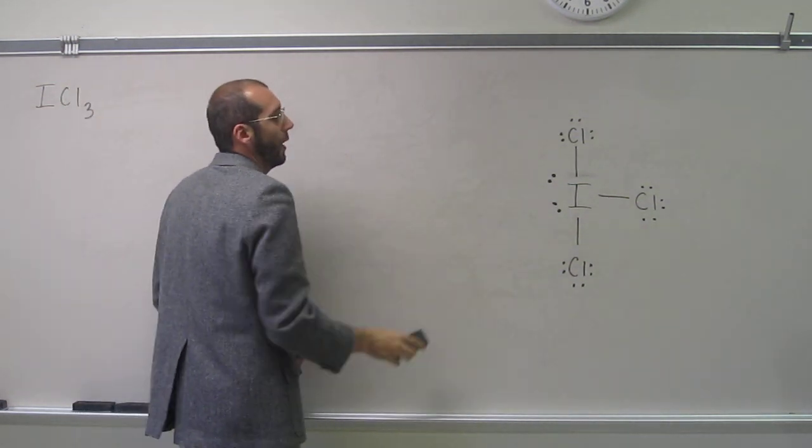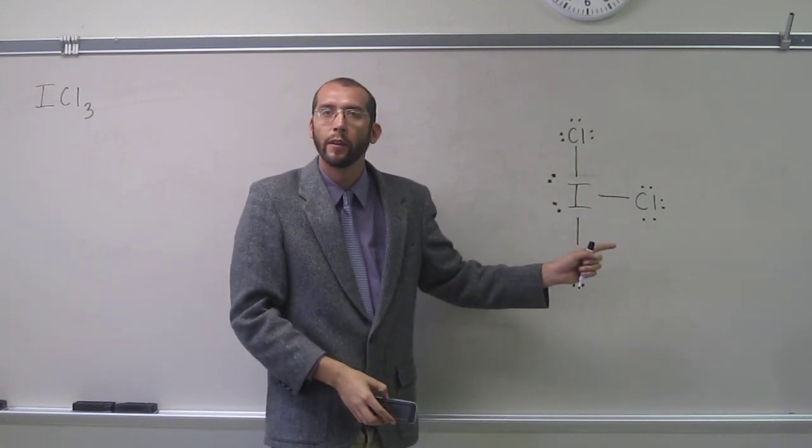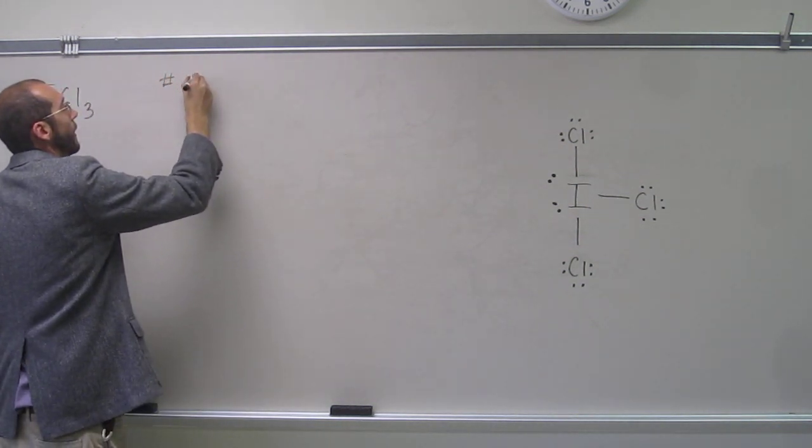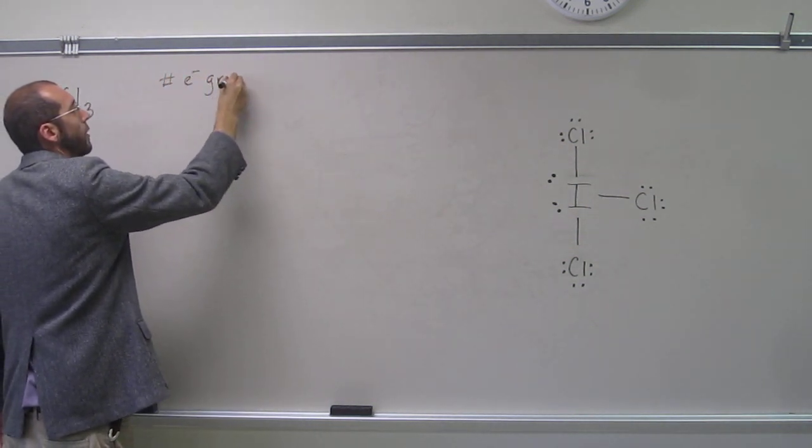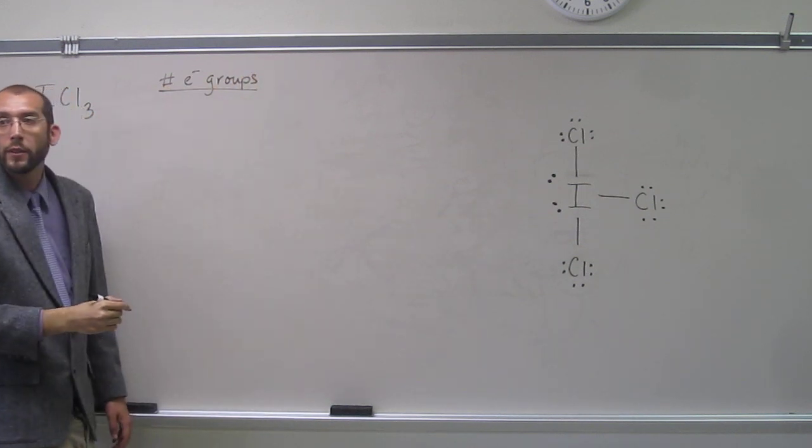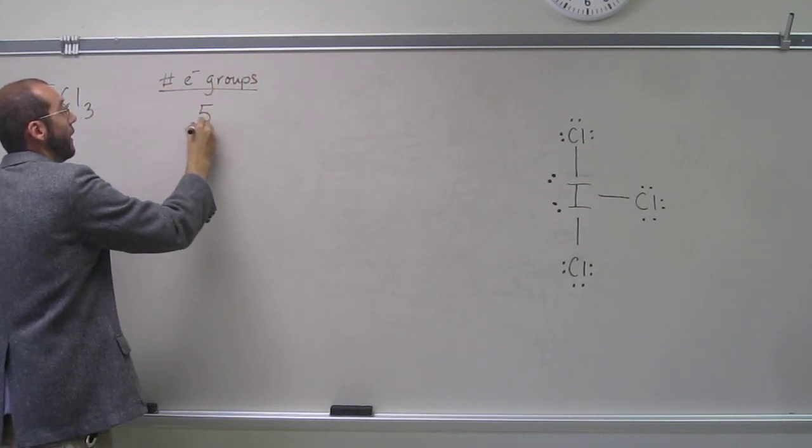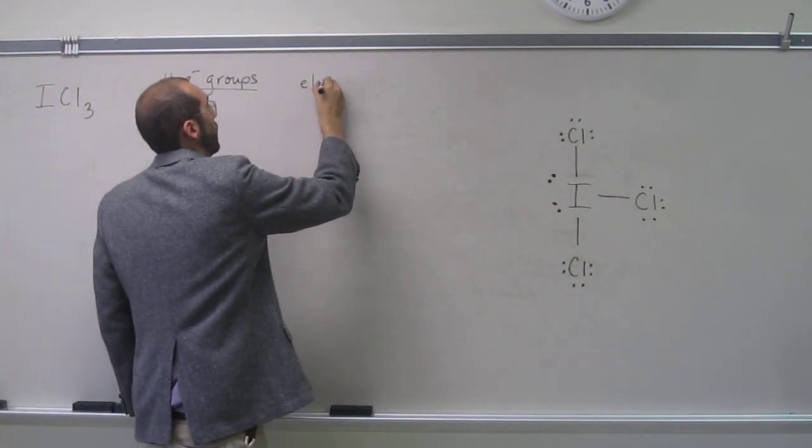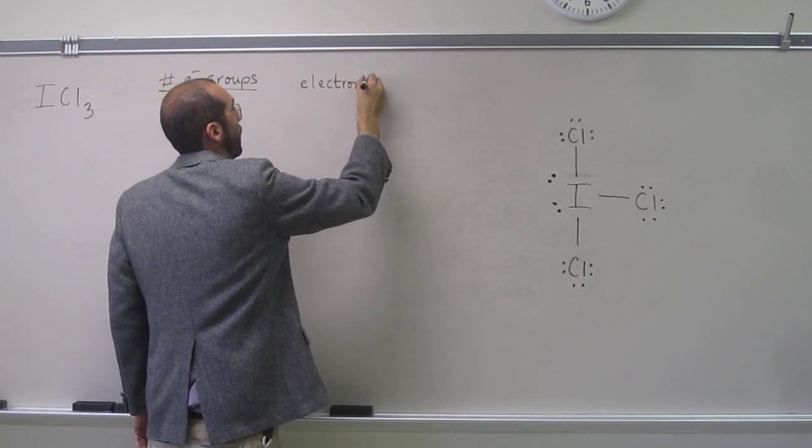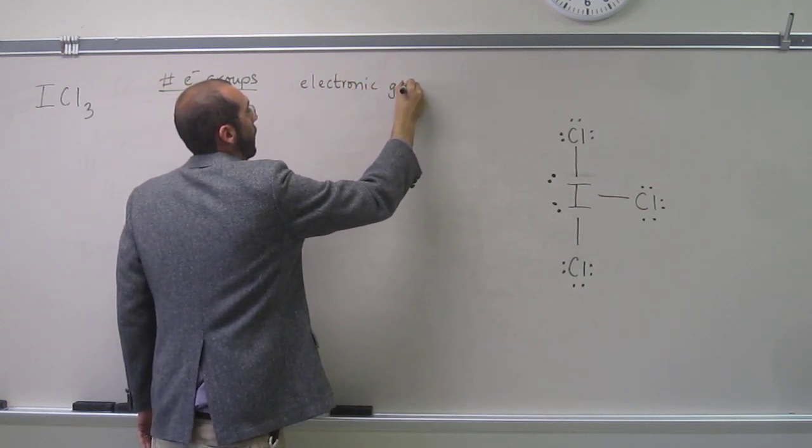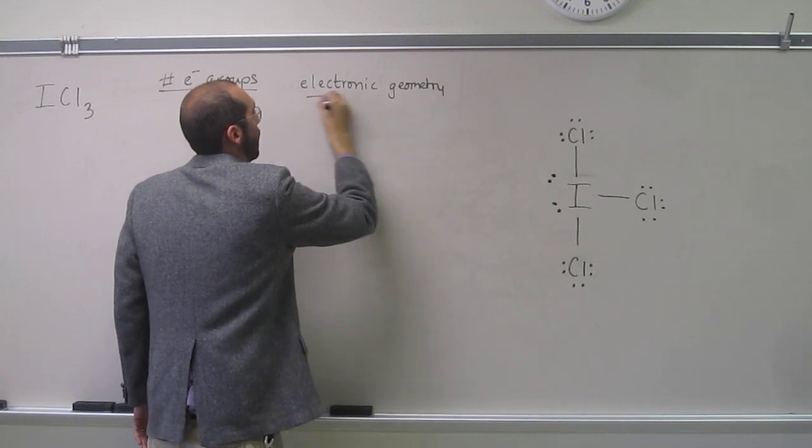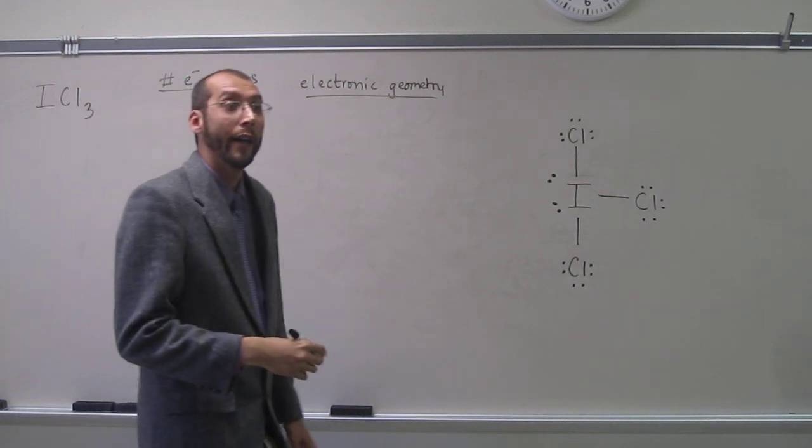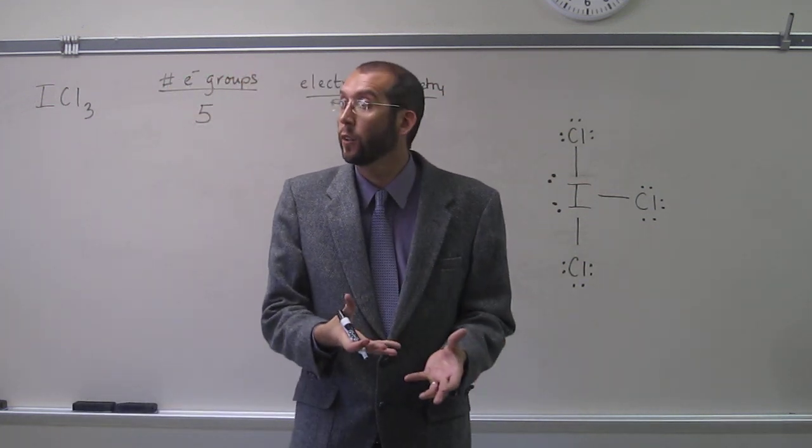How many electron groups does this iodine have around it? Five. Five, right? So we're going to write number of electron groups. So five electron groups. So what is the electronic geometry, then? Trigonal bipyramidal. Why? Because that has the five electron groups around it.